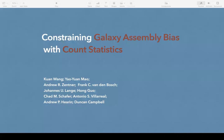Hi, everyone. Thanks for being here with me. A brief self-introduction. My name is Kuan. I am a graduate student at the University of Pittsburgh. I will be moving to the University of Michigan as a postdoc in the fall. Today I will tell you about our work on constraining the assembly bias component of the galaxy halo connection using count statistics.